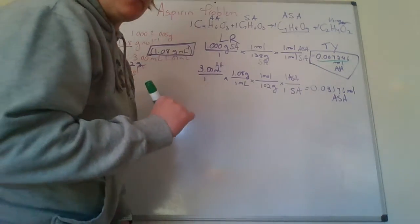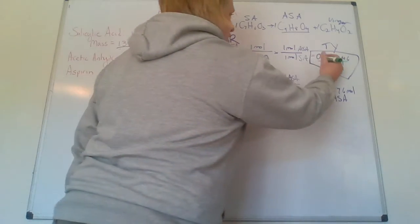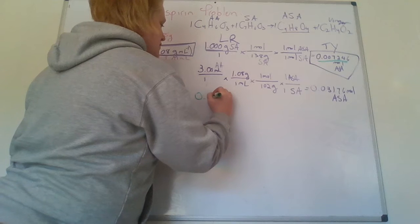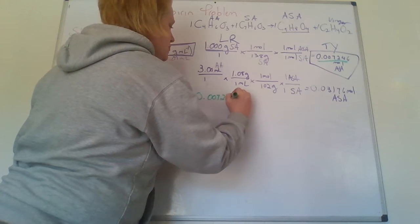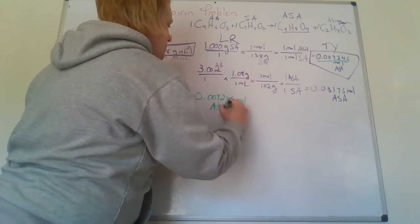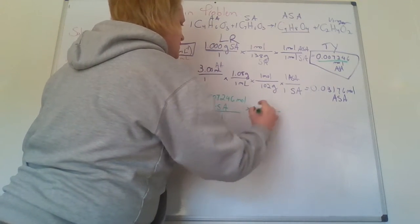Next thing to do, excess reagent. So what I'm going to do now is I'm going to take the theoretical yield of aspirin that I made, the 0.007246 moles of ASA, and I'm going to change that into moles of the excess reagent.